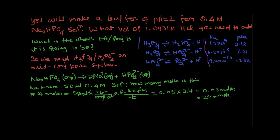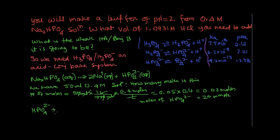So now we have 20 millimoles. The moles of HPO₄²⁻ corresponds to 20 milliliters. If we need 20 milliliters of the acid, we have HPO₄²⁻ reacting with a strong acid, which reacts completely to give H₂PO₄⁻.